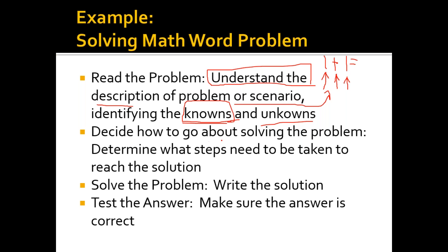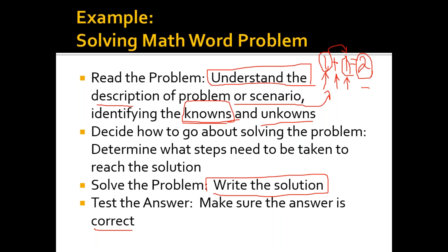In addition, we decide how to go about solving the problem and determine what steps need to be taken to reach the solution. The philosophy of solving this problem means putting one with one to get the result. Now solve the problem — write the solution: 1 plus 1 equals 2. Then test the answer: make sure the answer is correct. Yes, 2 equals 1 plus 1 — this is correct. We have applied the four steps to solve our problem.